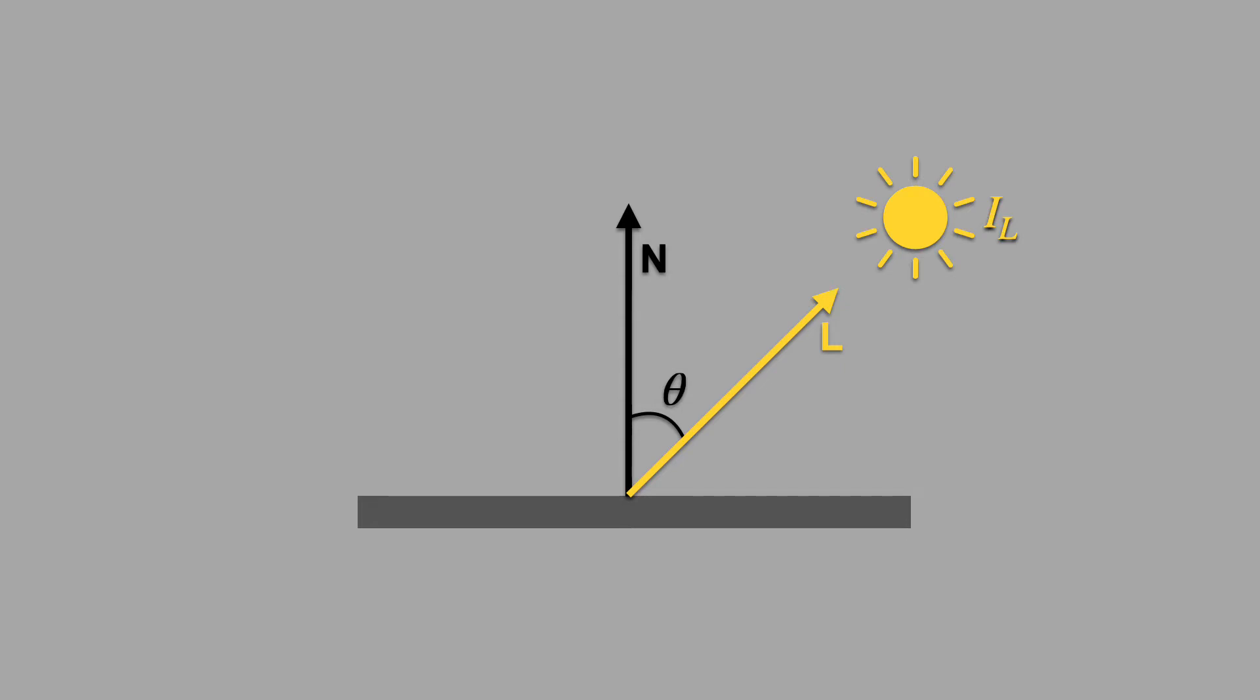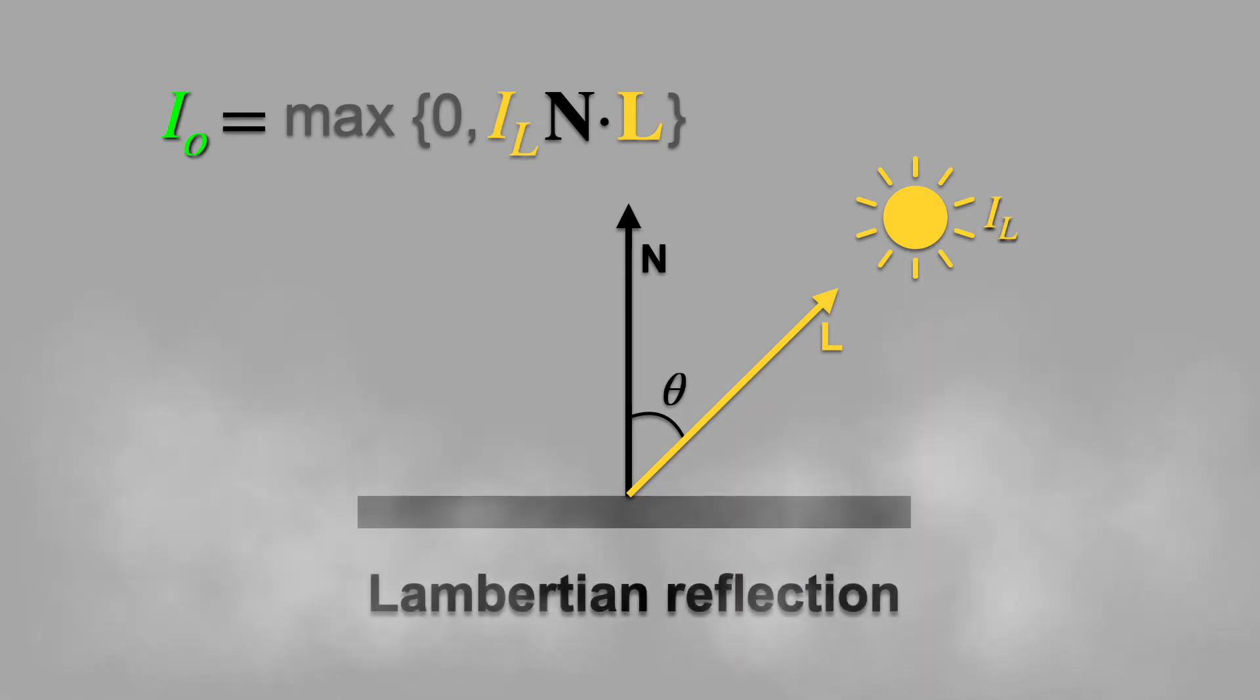Let's say the light source has a brightness or intensity value of I_L. Then the outgoing intensity is proportional to the cosine of the angle between the normal and light source directions. We can write this as N dot L. We'll adjust this formula slightly to make sure it doesn't go negative. This is called Lambertian reflection.